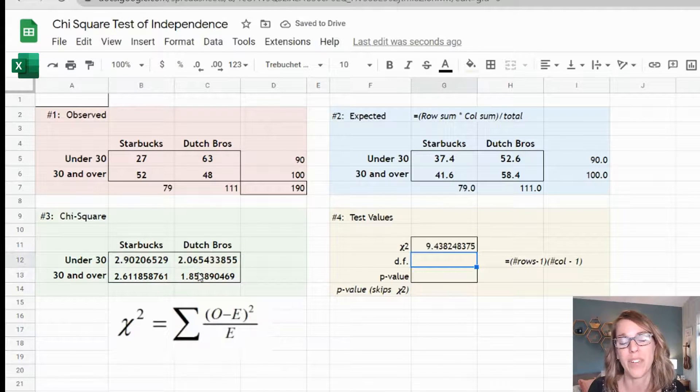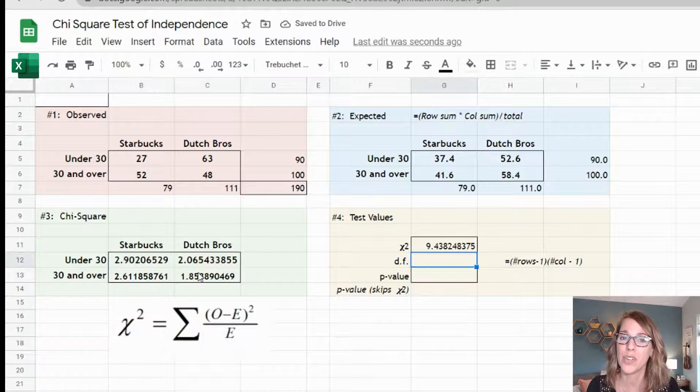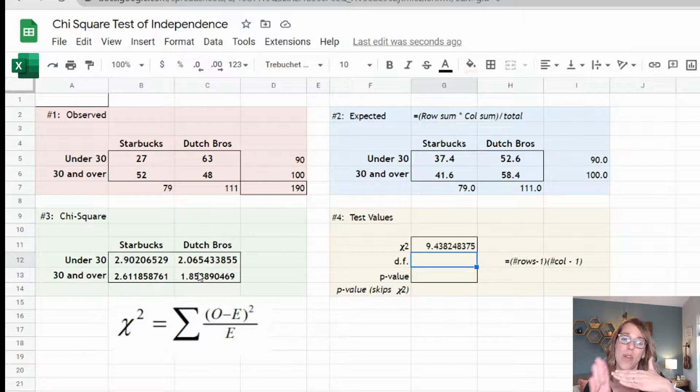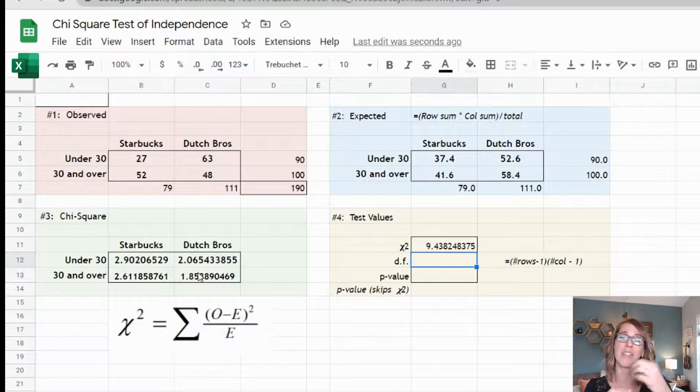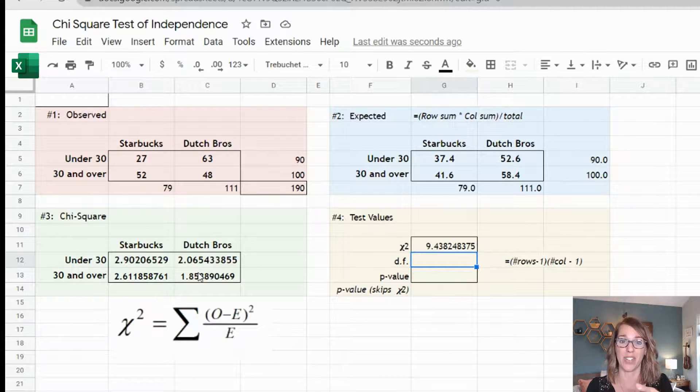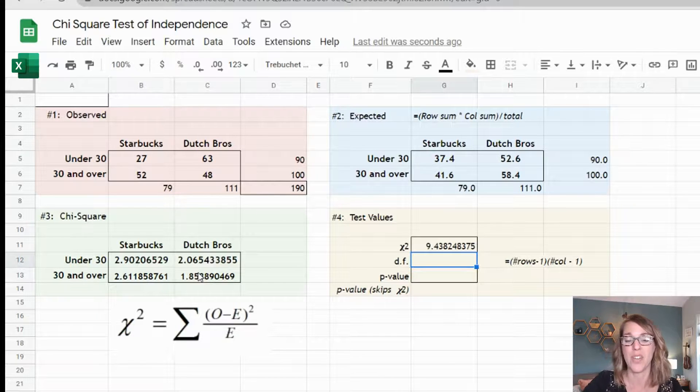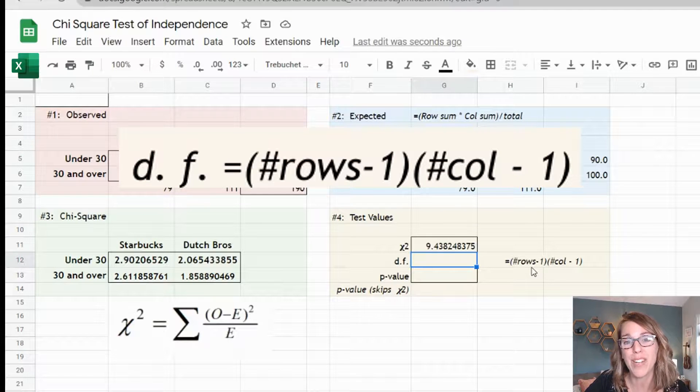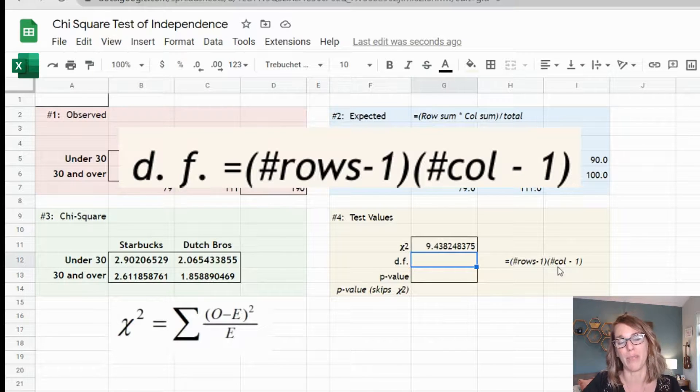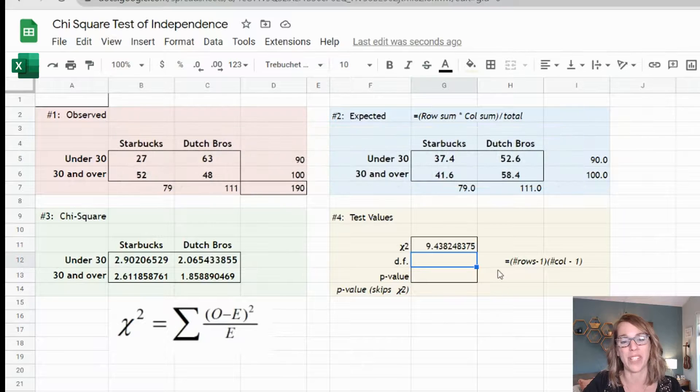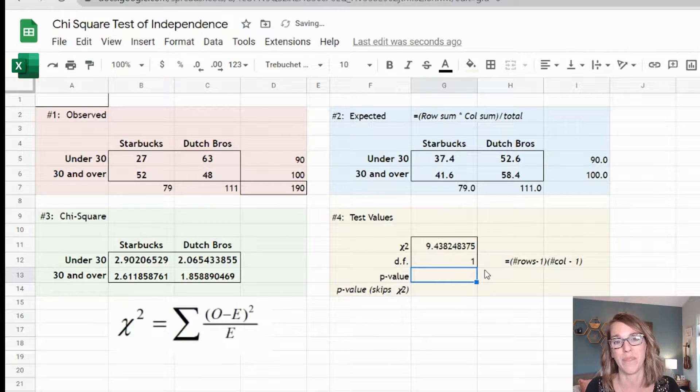Next I want degrees of freedom. For contingency tables, the degrees of freedom takes off one row and one column, which is going to leave me with a single cell from my original table without the sums. We can also do the number of rows minus one times the number of columns minus one. Either way that's going to be one times one or a single degree of freedom.